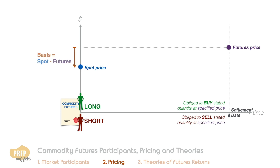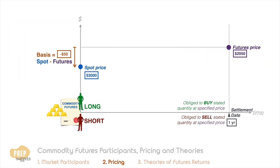The difference between the spot price and the futures price is referred to as the basis of that particular contract. For example, if spot gold is $2,000 per ounce and the one-year futures price of gold is $2,050, the basis for one-year gold futures is minus $50. The difference between the futures price of a nearer maturity and the futures price of a more distant maturity is known as the calendar spread.